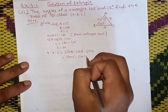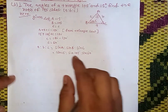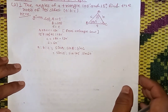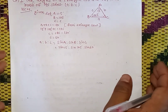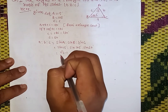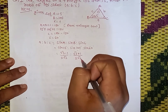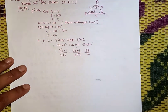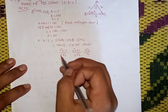The ratio formula is: a is to b is to c equals sin A is to sin B is to sin C. So sin 15 degree is to sin 105 degree is to sin 60 degree. The value of sin 15 is (root 3 minus 1) divided by 2 root 2, and sin 60 is root 3 divided by 2.